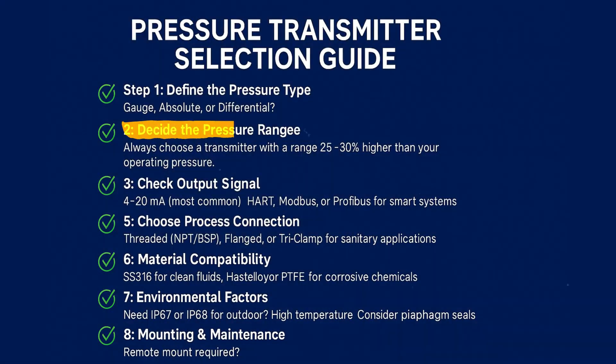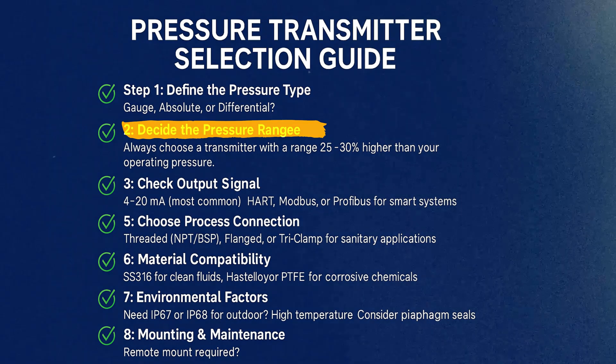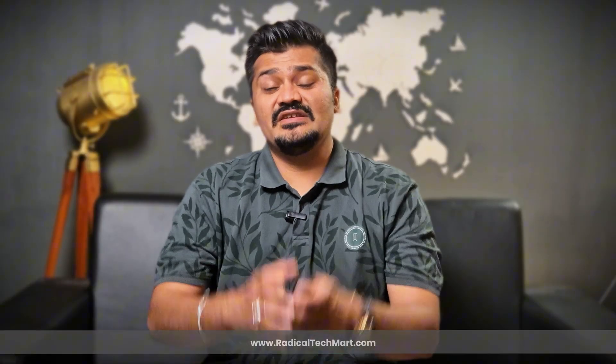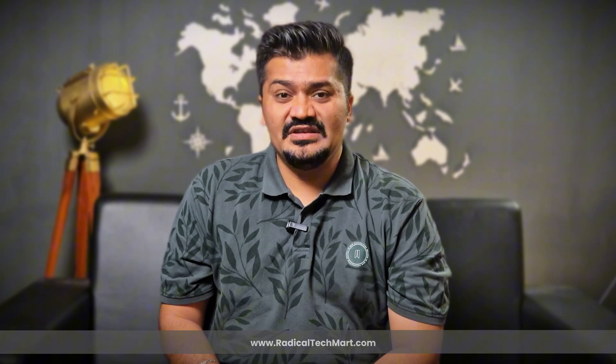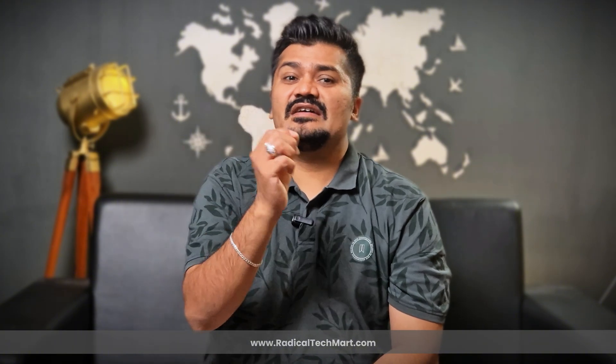Step 2: Decide the pressure range. Always choose a transmitter with a range 25 to 30 percent higher than your operating pressure. Step 3: Check accuracy requirements.